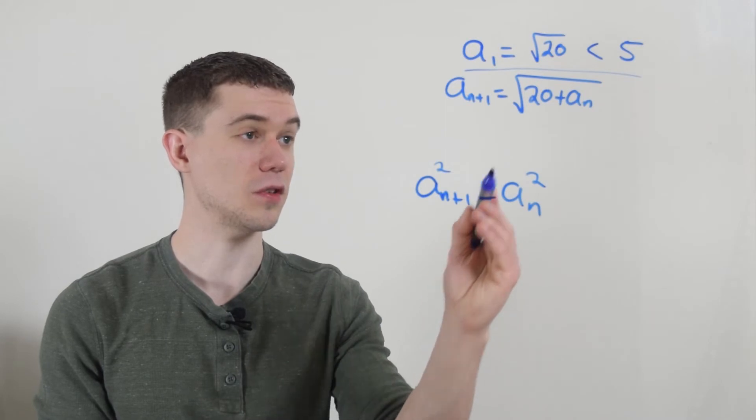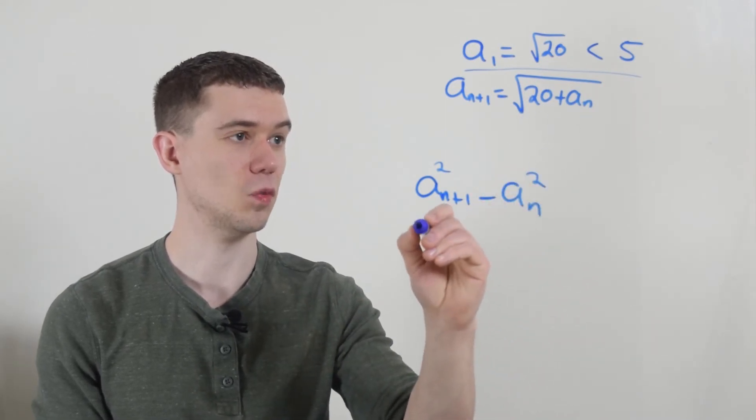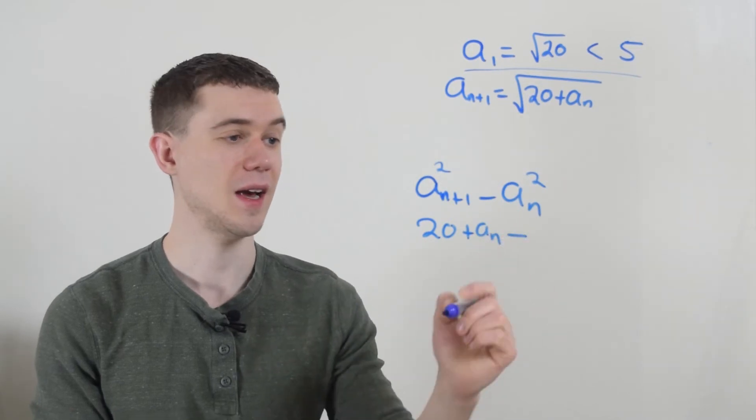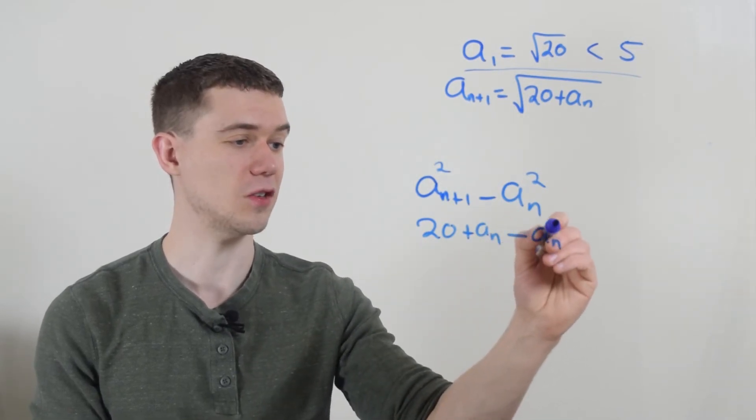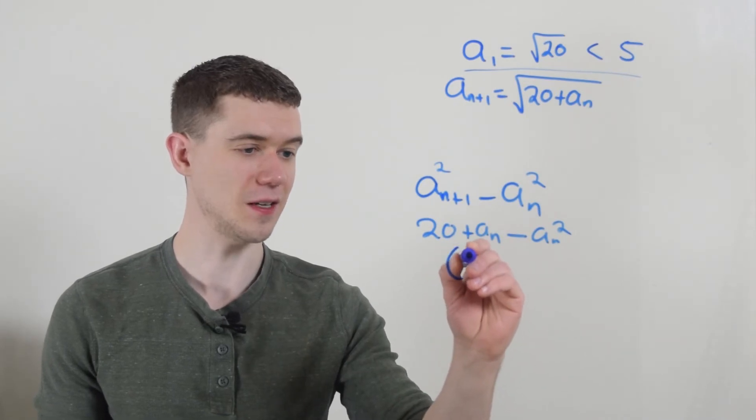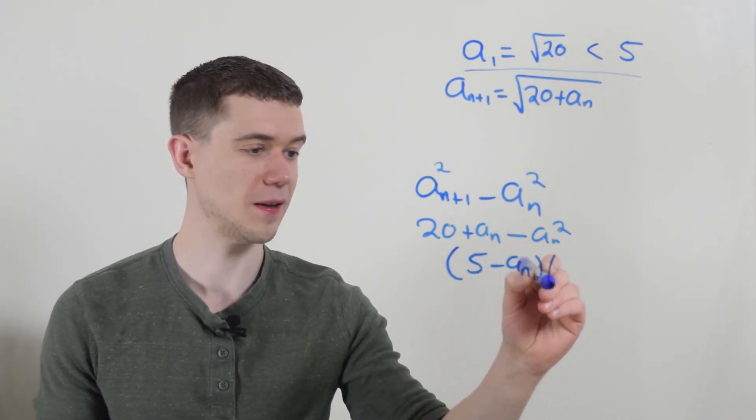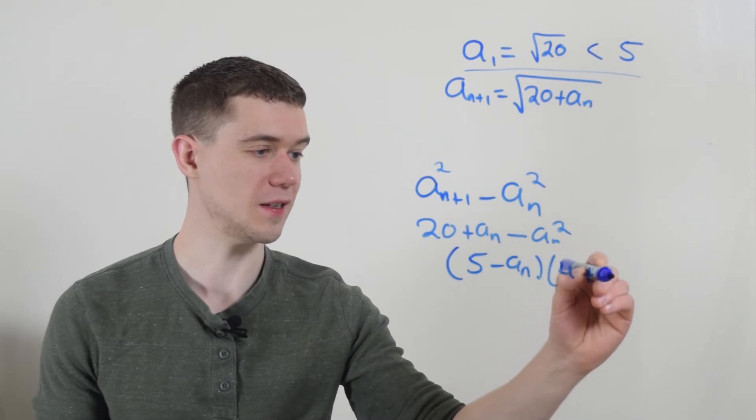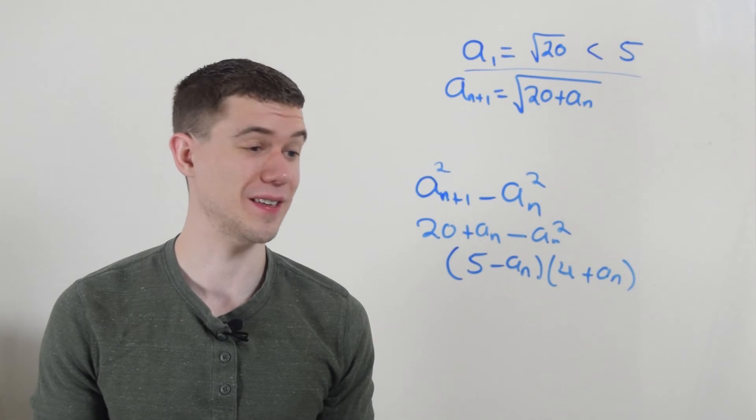Well, a_{n+1} squared, here's a_{n+1}, it would just be 20 plus a_n. And then I have minus a_n squared. So I think this factors into (5 - a_n) times (4 + a_n). And now it remains to see, is this always greater than zero?